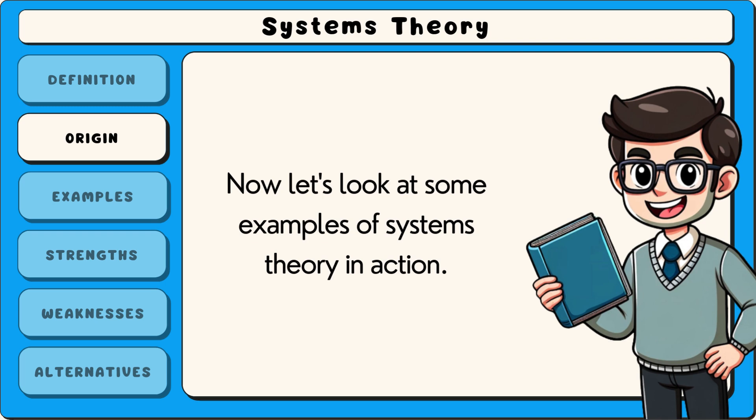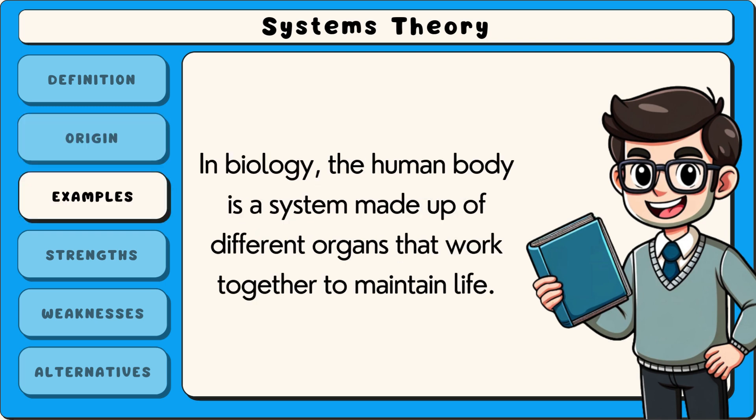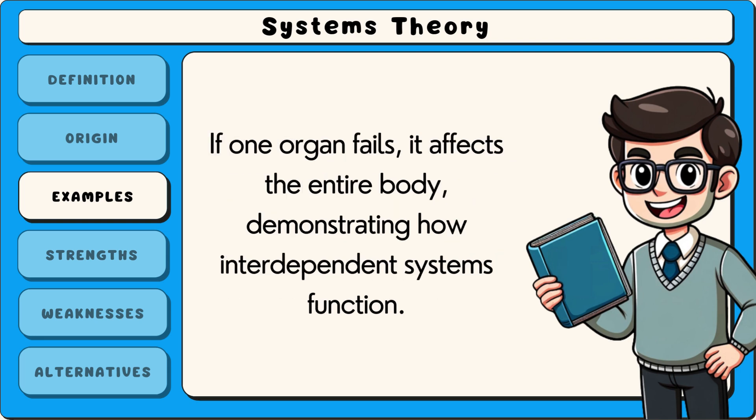Now let's look at some examples of systems theory in action. In biology, the human body is a system made up of different organs that work together to maintain life. If one organ fails, it affects the entire body, demonstrating how interdependent systems function.